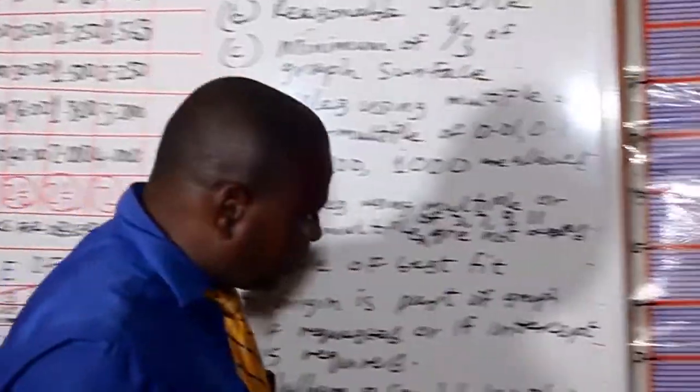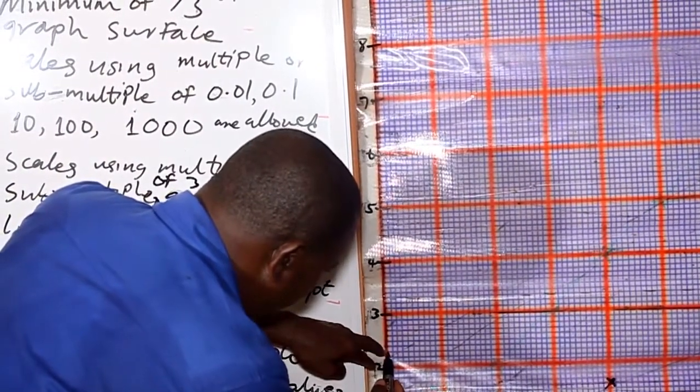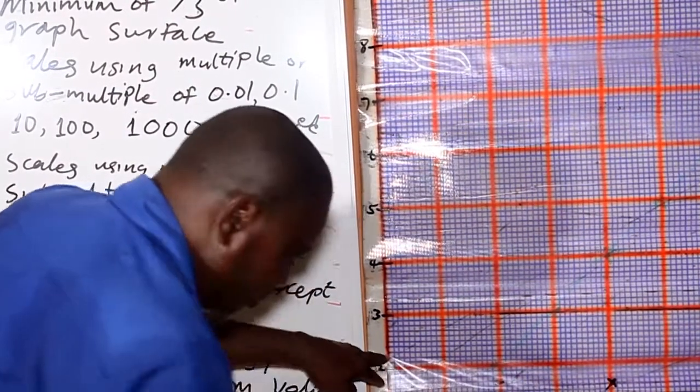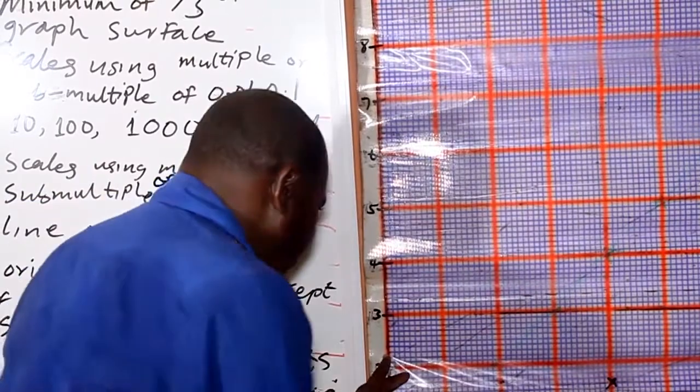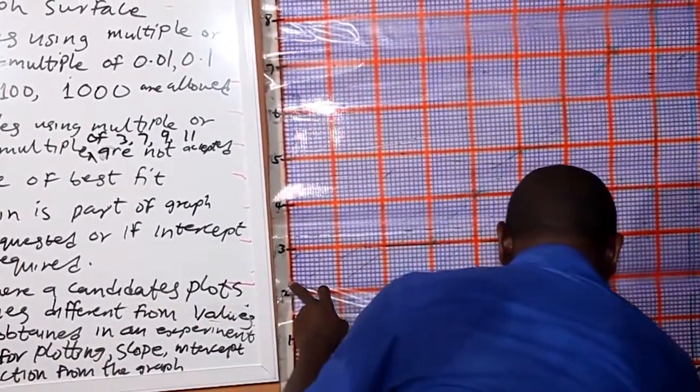The next one is 2.25 against 60. This is 2. 2.1, 2.2. This is 2.3. It will be between the second and the third. So you trace it to 60.